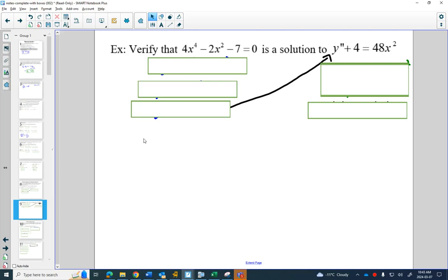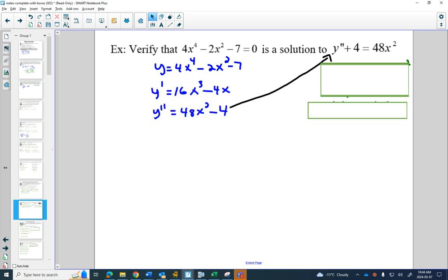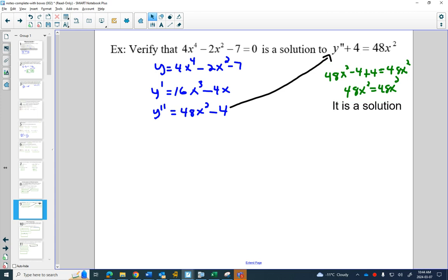Here's our differential equation. Apparently, y double prime plus 4 should equal 48x squared. Could this be a possibility for the equation? So, we make y equal to that equation. Find our first derivative, find our second derivative, plug that in for the y prime to see if it works, and it does, so it is a solution.